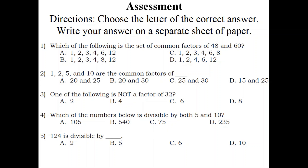Assessment. Directions: Choose the letter of the correct answer. Write your answer on a separate sheet of paper. Number 1: Which of the following is the set of common factors of 48 and 60? A. 1, 2, 3, 4, 6, 12. B. 1, 2, 3, 4, 8, 12. C. 1, 2, 3, 4, 6, 8. D. 1, 2, 4, 6, 12. Answer: A. 1, 2, 3, 4, 6, 12. Number 2: 1, 2, 5, and 10 are the common factors of blank. A. 20 and 25. B. 20 and 30. C. 25 and 30. D. 15 and 25. Answer: B. 20 and 30.